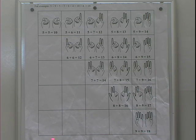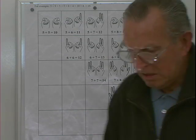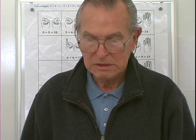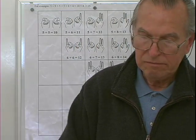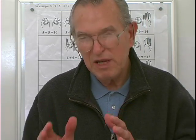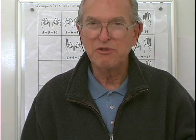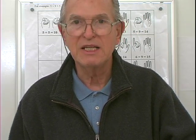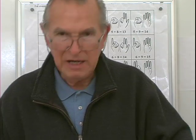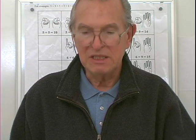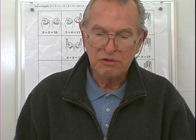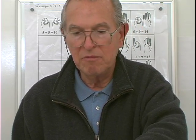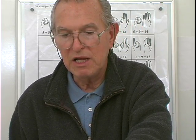So there it is — the facts in the addition table for the sums that are greater than two basic digits, adding up to a two-digit sum. Those sums are going to be between 10 and 18. 9 and 9 is 18 — 9 is the largest number in the addition table, so the largest sum will be 9 and 9, which is 18.